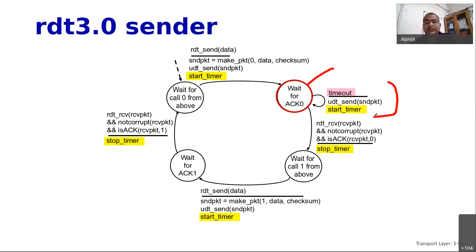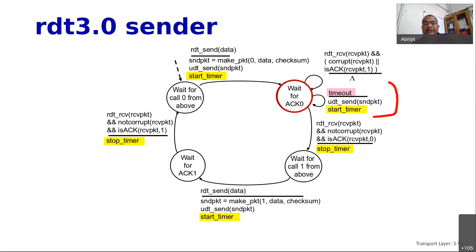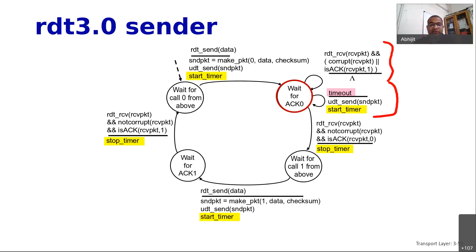If waiting for an acknowledgement and there is a timeout, you reset and restart the timer — important because even the retransmission can get lost. An additional possibility is that you keep receiving acknowledgements for an earlier sent packet because the receiver may send duplicate acknowledgements. Even though you have moved to the next state, you can still receive acknowledgements from another state — in that case you simply ignore them, since this is a stop-and-wait protocol with only two possible packets.